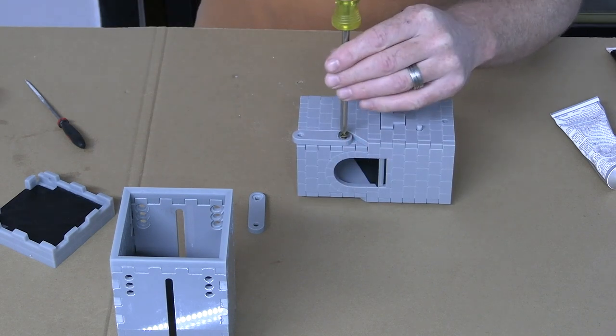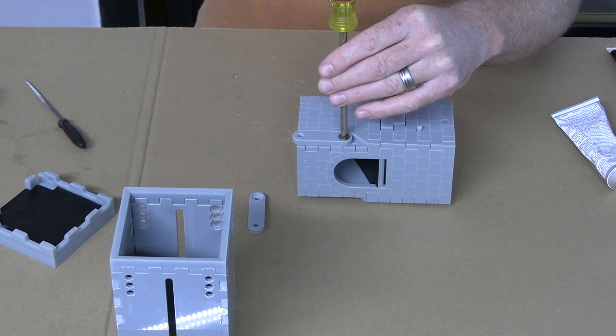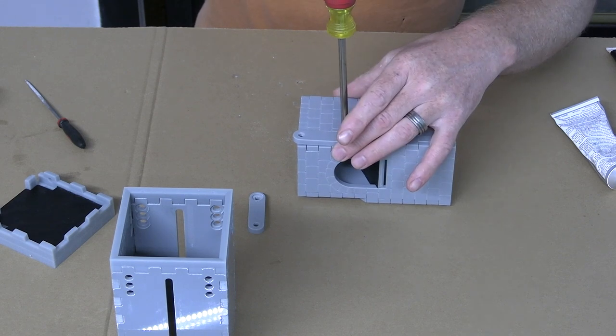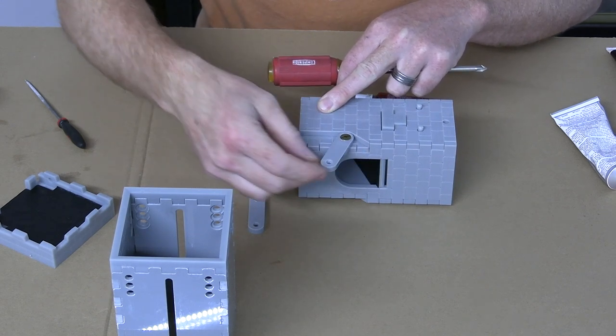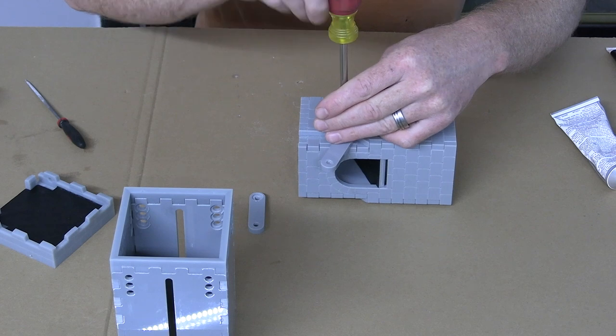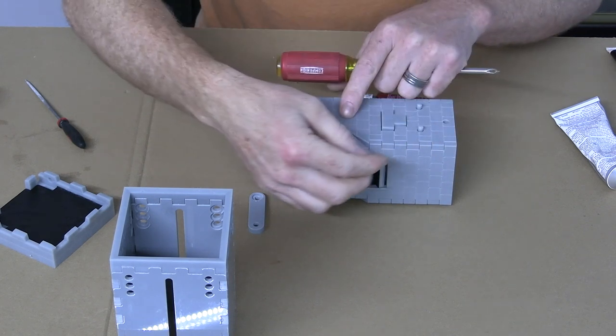Now, before you add the thread locker, you're going to want to tighten those screws all the way down and check the fitment. If with the screw tightened all the way down, the swing arm still moves freely, you're good to go. But if it's a little snug, you're going to want to back the screw off and see how far you had to back it off to make it fit the way you'd like.